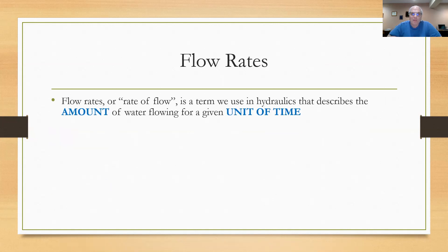Now flow rates, or sometimes it's called rate of flow, is a term we use in hydraulics that describes the amount of water flowing for a given unit of time. So there are really two concepts here: the amount of water, the volume of water that's in motion, and the amount of time that it takes to move that water, or how much of that water is moving per unit of time. So you're often going to hear terms like gallons per minute or cubic feet per second.